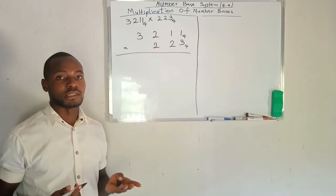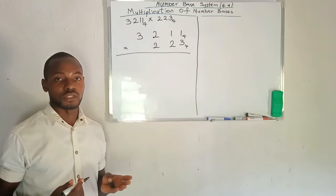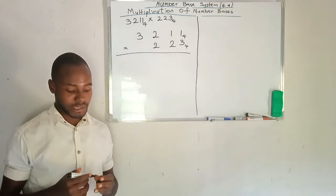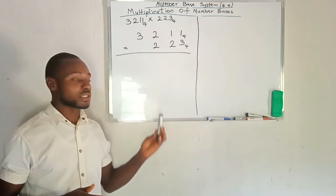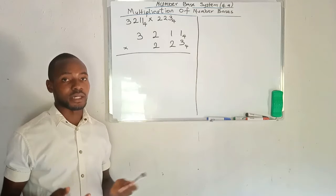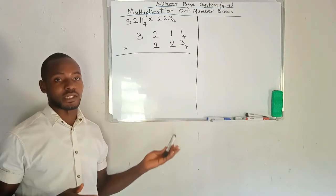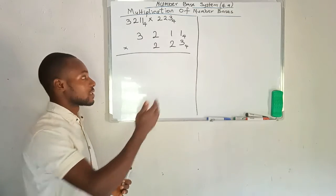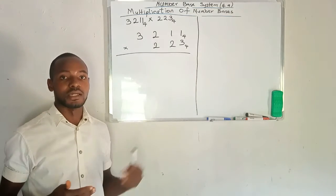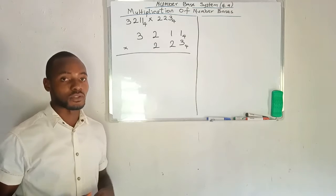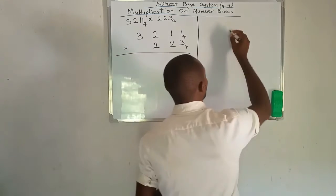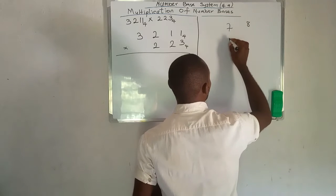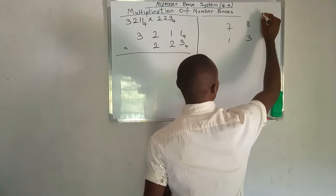Before we continue with this, I would like to give a little illustration. Just the same way we multiply numbers in base 10, it's the same way we multiply numbers in other bases. I will give an example of multiplying numbers in base 10, explain it, and then use the same method to do the same here in base 4. So let's say we want to multiply 78 times 13, and this is base 10.